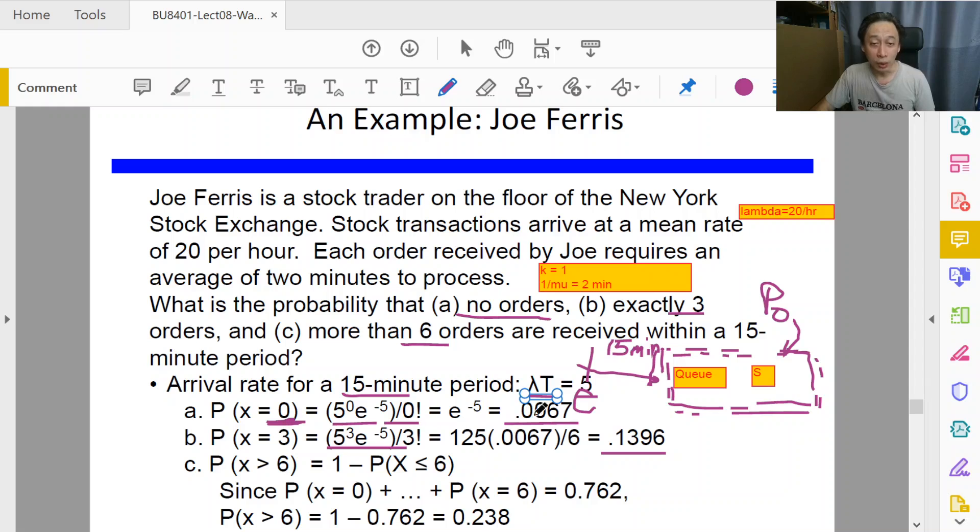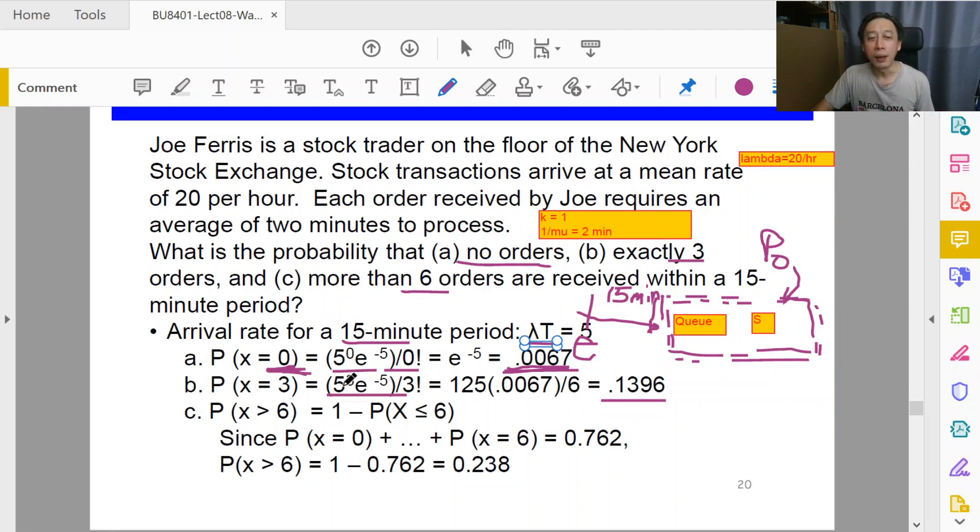Well, according to our calculations, no customer will arrive within a time period of 15 minutes with a probability of a very, very small number, which means it is unlikely that there is no one. The probability of at least one or more customers arriving within 15 minute time interval is one minus this, so it's 0.9933 - very, very high chance.